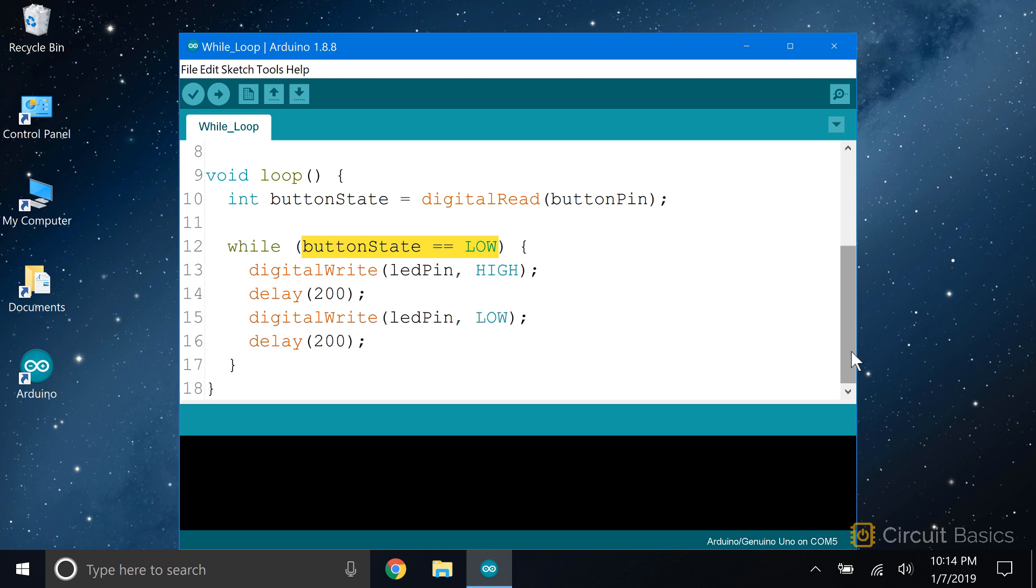If you remember from the lecture on buttons and switches, pressing the push button causes pin 7 to get pulled low. So my condition is while buttonState equals low. So when the button is pressed, buttonState will equal low, making the condition true. So the Arduino will enter the while loop and execute this block of code until the condition becomes false.